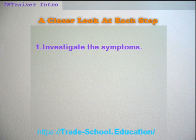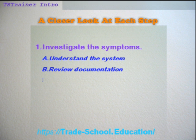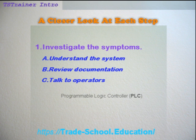A closer look at each step. Investigate the symptoms. Be sure you understand the system. Gather any available documentation — this may be hard copies or information available online. Locate schematics, piping and instrumentation diagrams, as well as loop sheets. Talking to the operators and anyone else familiar with the operation may provide needed information. Pull all operations and maintenance records and control and configuration parameters. This information may be available from a PLC or DCS or other online databases.